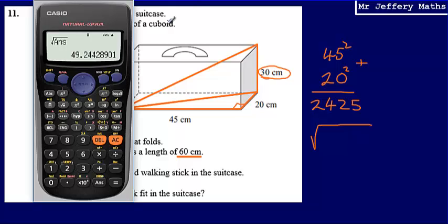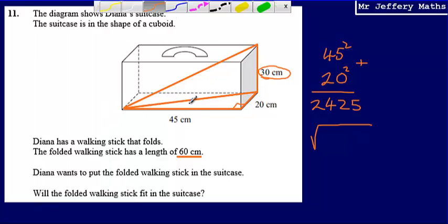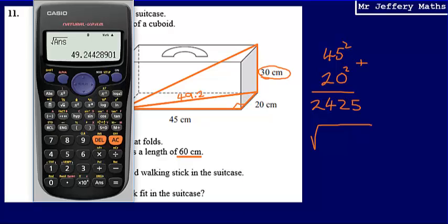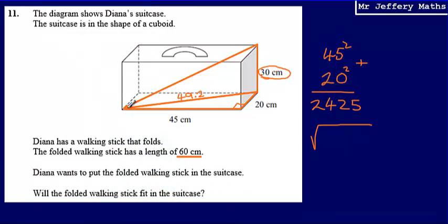So what I now know is that this length here is 49, we'll just call it 49.2 for now. I'm not going to use that value. I'm going to use the value that's in my calculator so that I don't make any mistakes with accuracy. But what I now know is that this length going along the floor of the suitcase is 49.2.